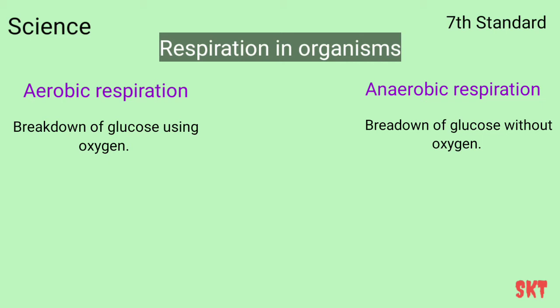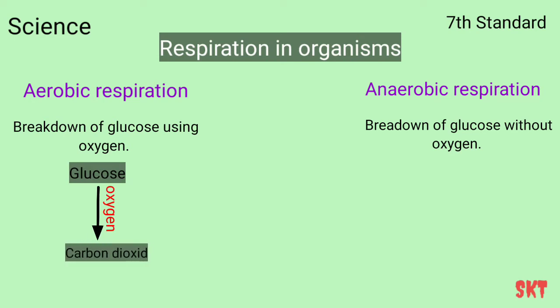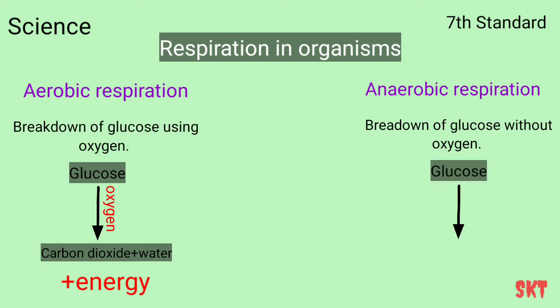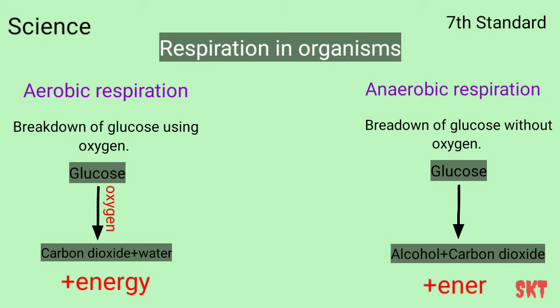Let us understand how aerobic respiration takes place. Food gives us glucose as a source of energy. In the presence of oxygen, glucose is broken down into carbon dioxide, water, and energy. Water and energy are used by our body and carbon dioxide is given out. In the absence of oxygen, glucose converts into alcohol, carbon dioxide, and energy. Aerobic respiration takes place in the human body, while anaerobic respiration takes place in organisms such as yeast and many types of bacteria.